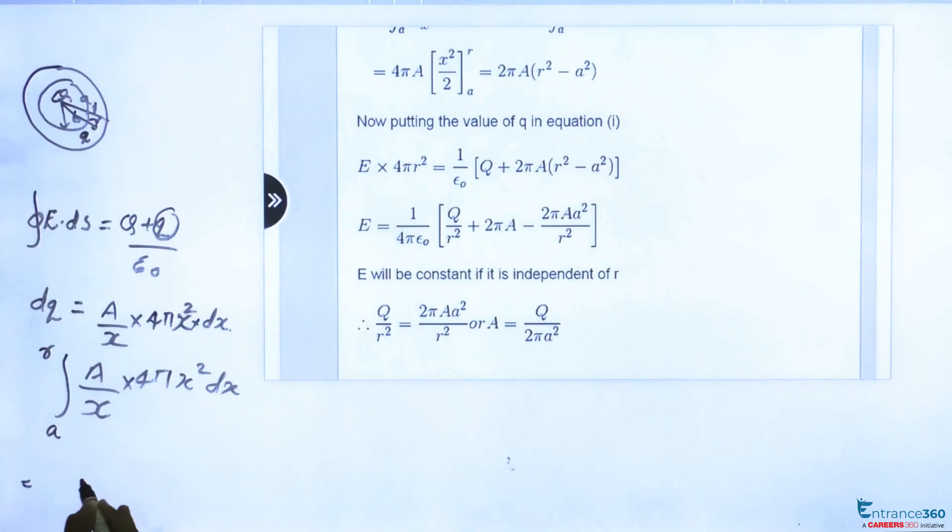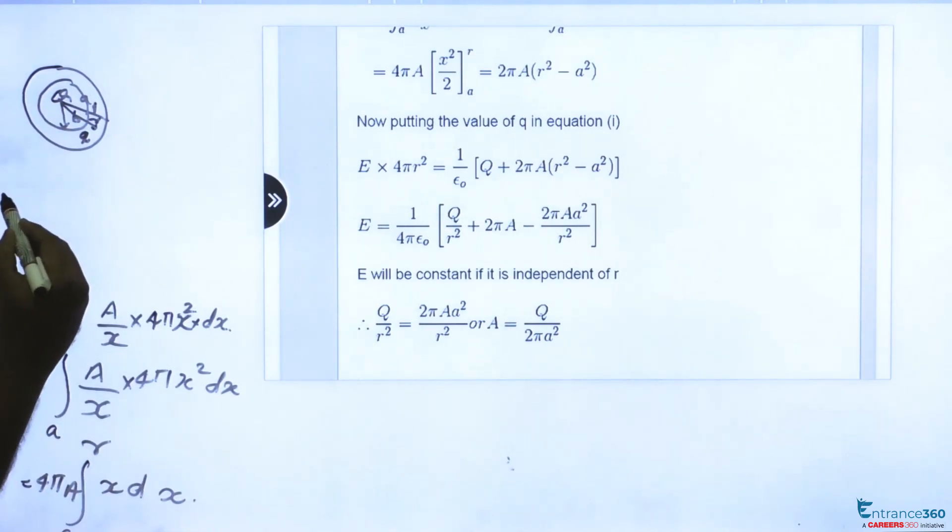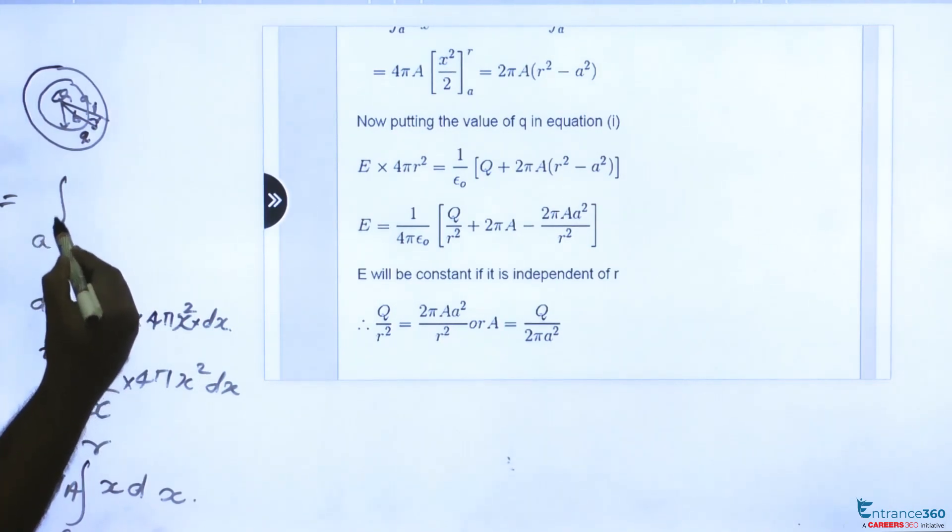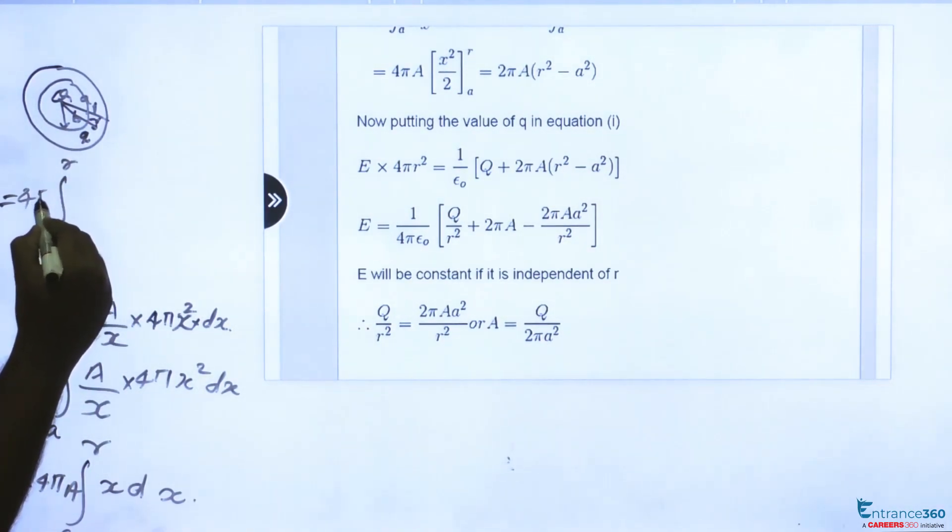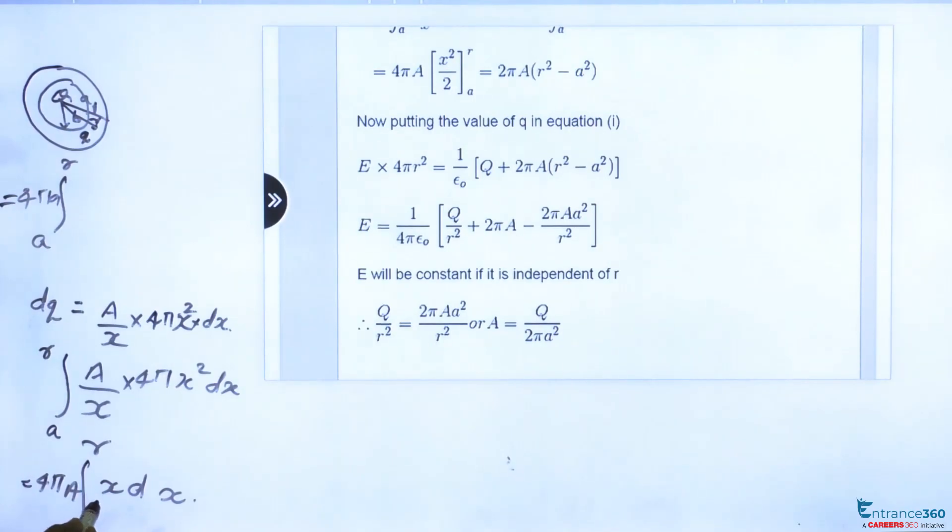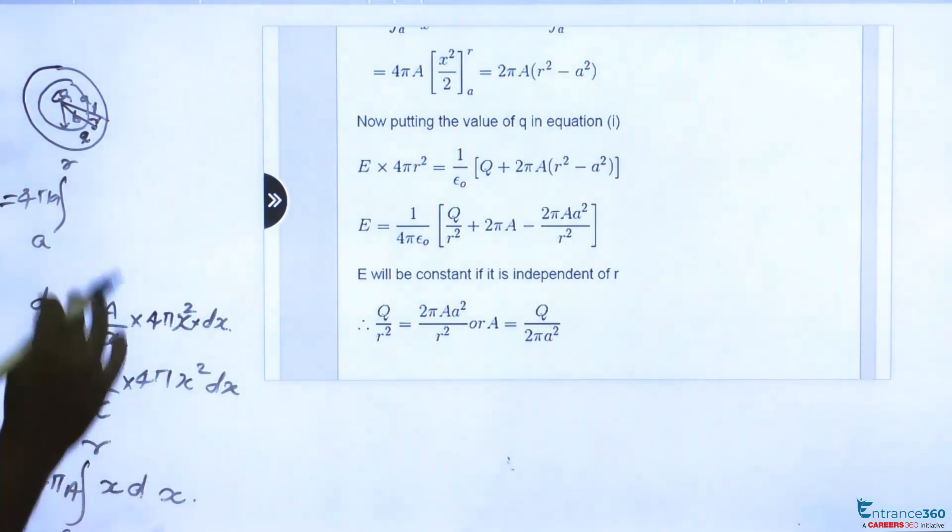This will be integral from A to R, 4 pi A x dx, which is equal to integral from A to R, 4 pi A x dx is x square by 2.